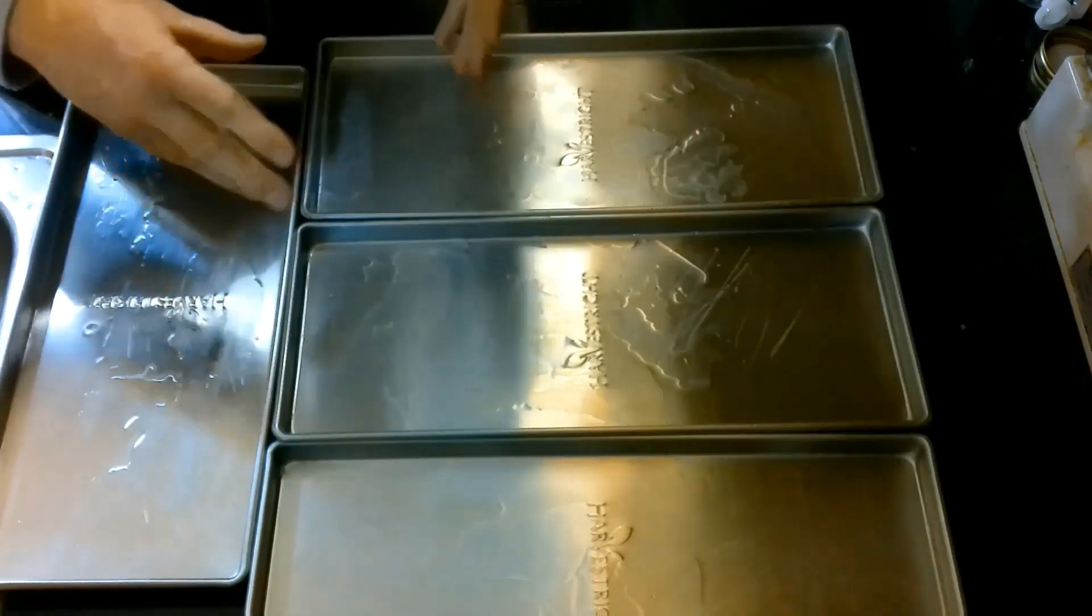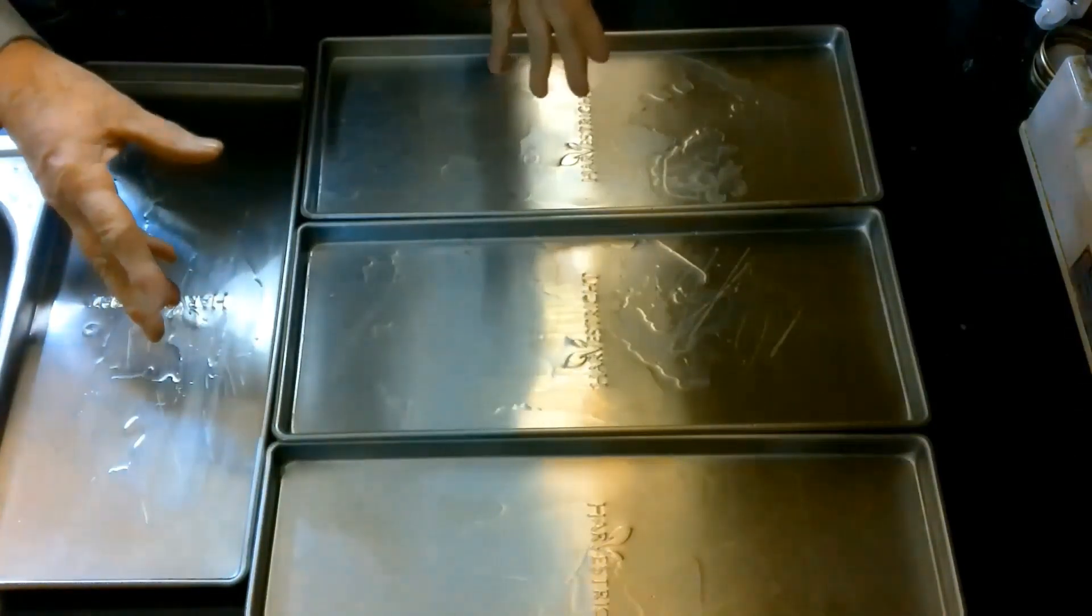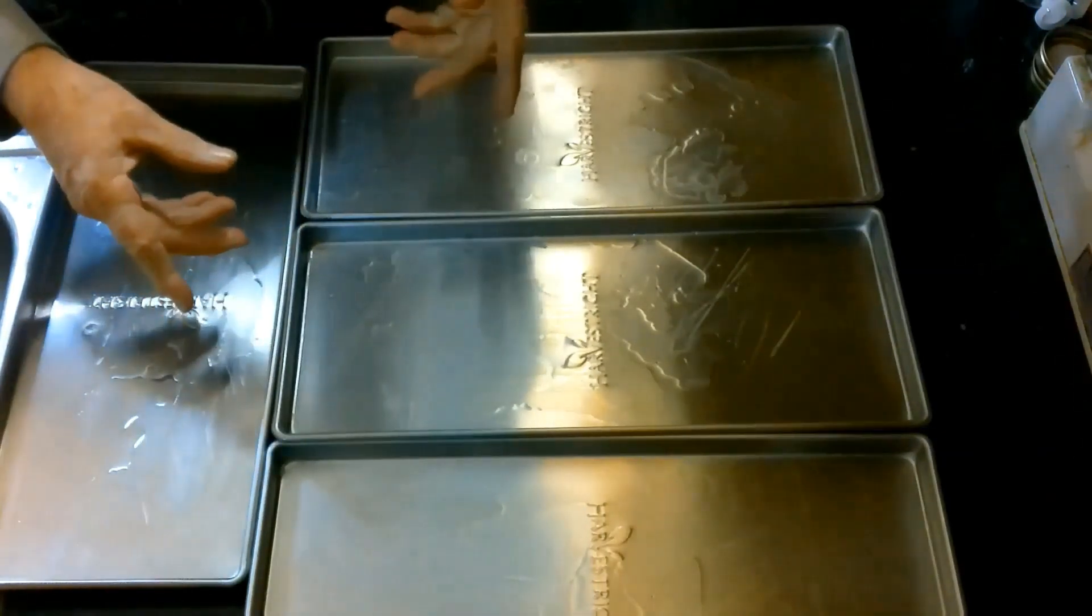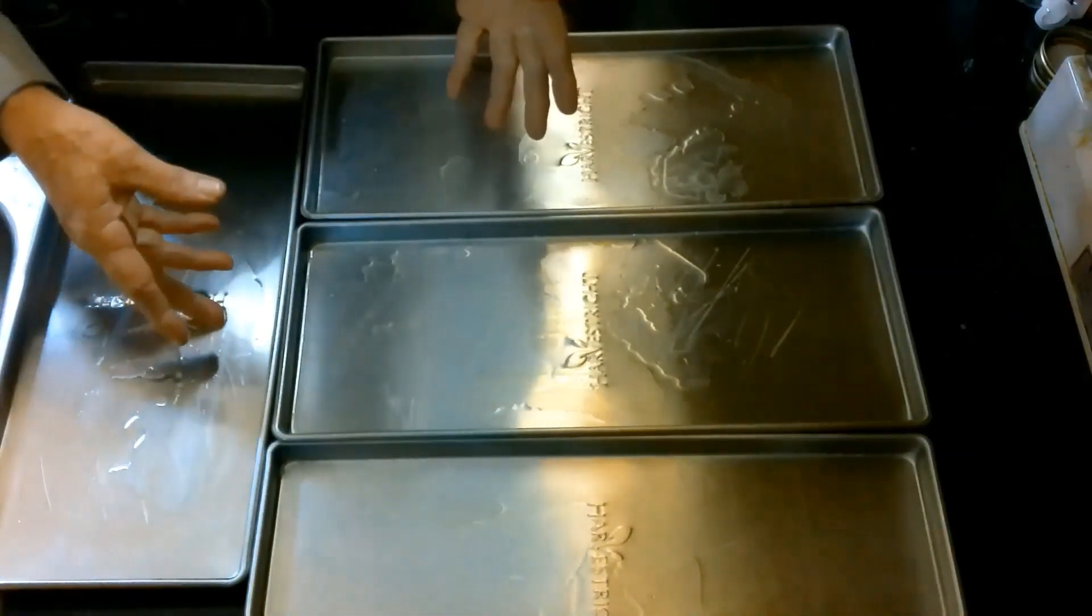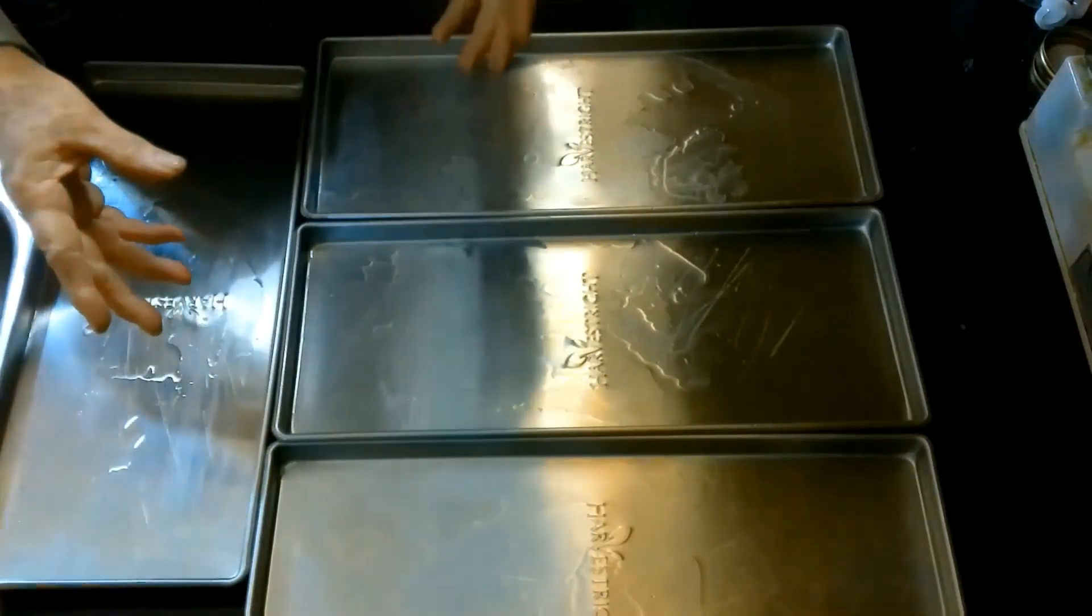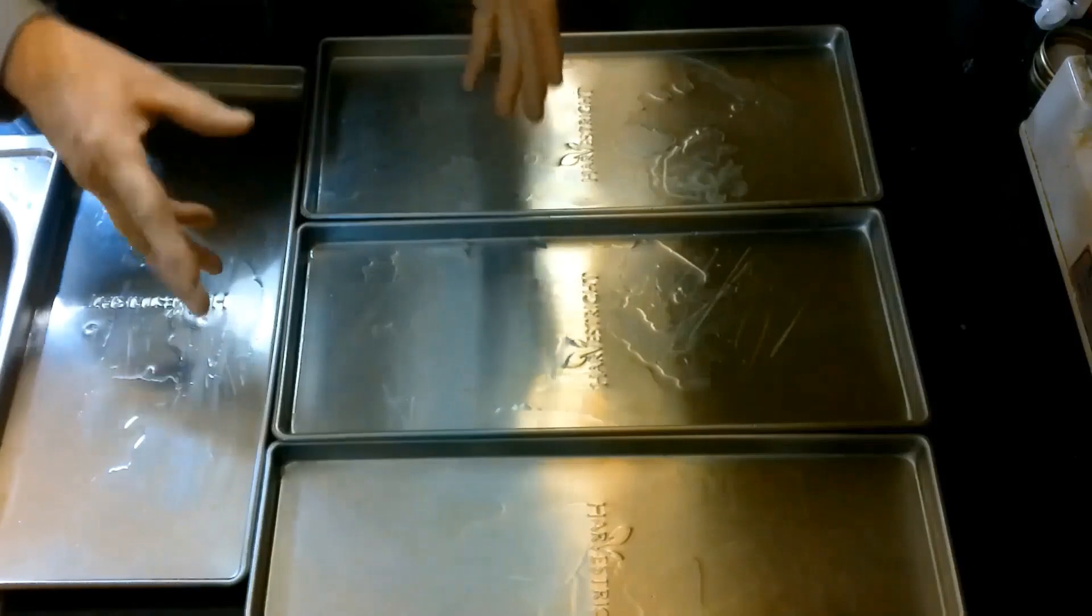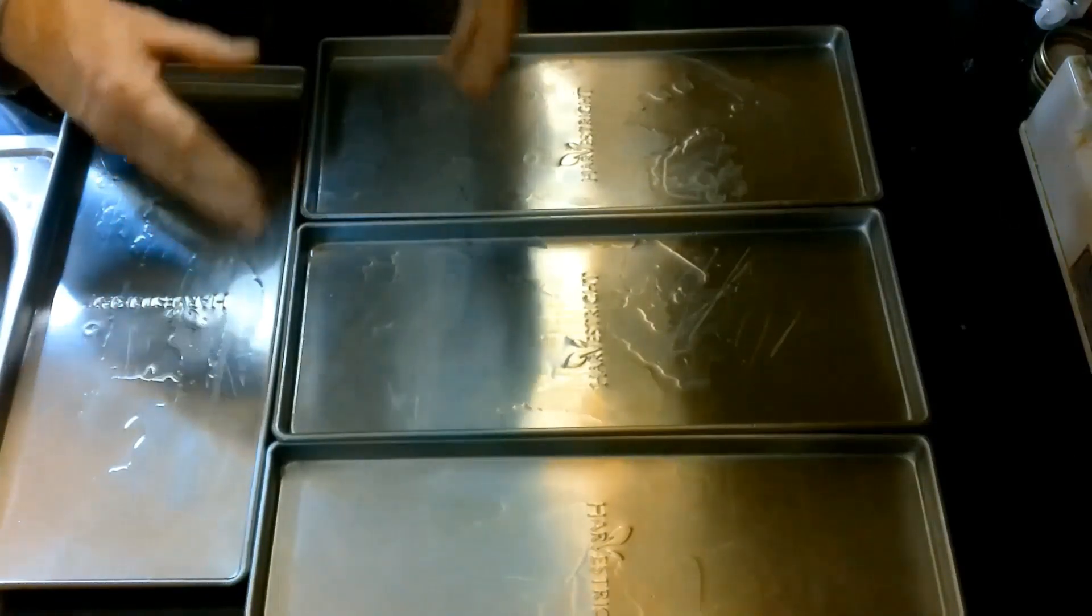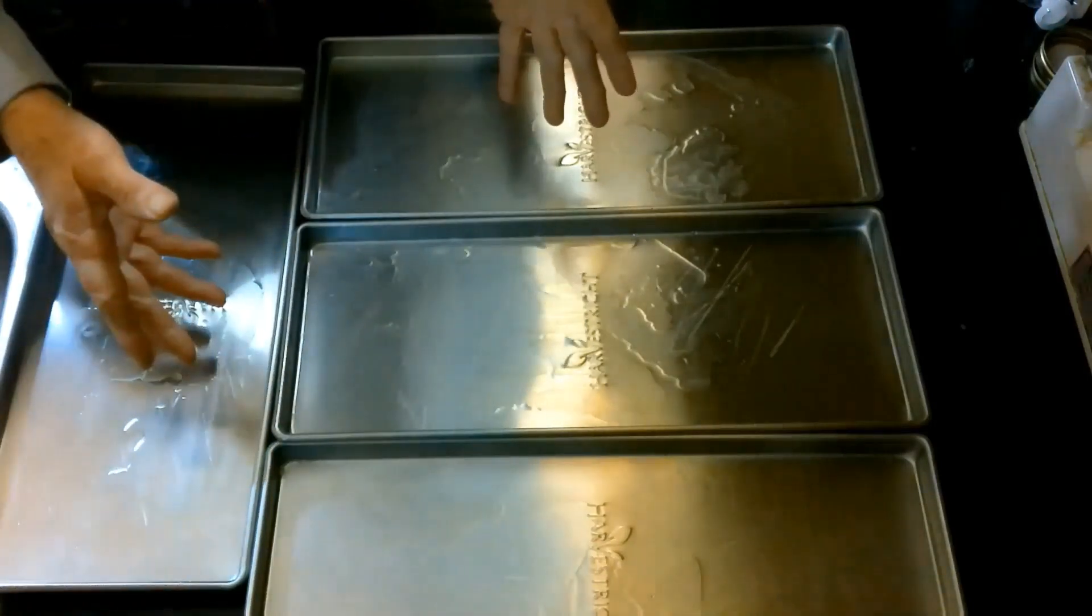Normally with all the other versions of the software, you have to get down to 500 to 600 millitorr to freeze dry successfully. But what Harvest Right is doing is the machine is going to measure what the lowest vacuum is possible and then will set the program around that, although it's going to be a little bit longer.